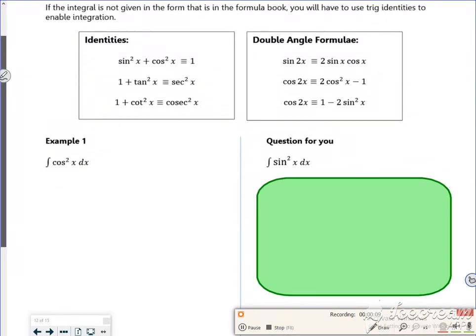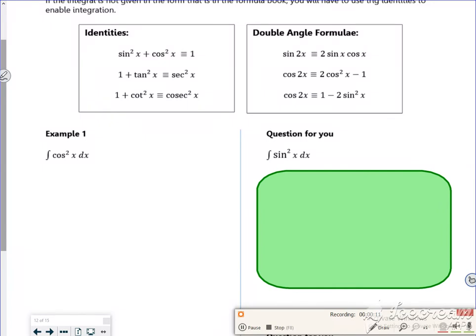Do you remember when we did double angle formulas and I said there's two other forms for cos 2x? We're going to use them for these examples here. I want to replace the cos squared. So if I add on one and divide by two, then cos squared x is going to be a half plus a half of cos 2x.